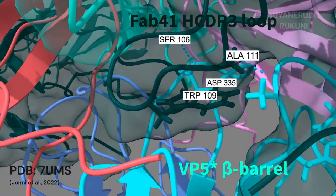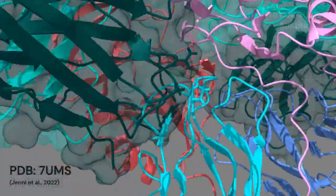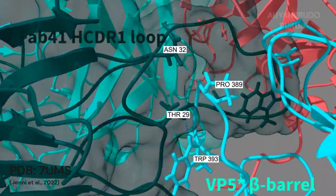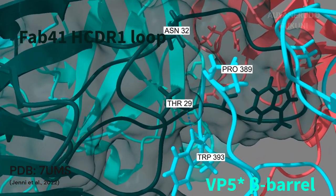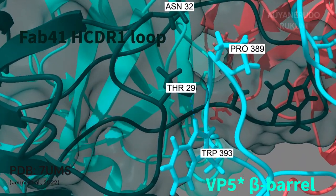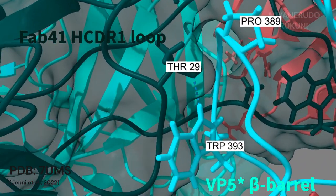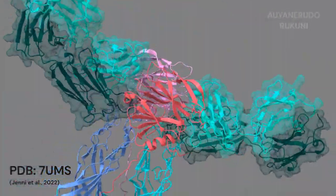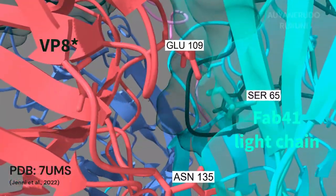The heavy-chain CDR1 also contacts VP5, clamping the loop through hydrogen bonds between threonine-29 and VP5 tryptophan-393, as well as asparagine-32 and the carbonyl of proline-389. Finally, the FAB41 light chain binds almost exclusively with the other VP8 domain.